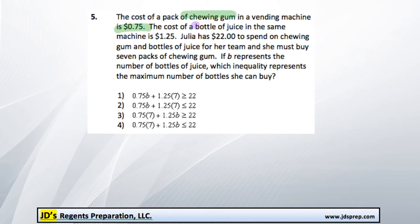The cost of a bottle of juice in the same machine is $1.25. Julia has $22 to spend on chewing gum and bottles of juice for her team, and she must buy 7 packs of chewing gum. If B represents the number of bottles of juice, which inequality represents the maximum number of bottles she can buy?